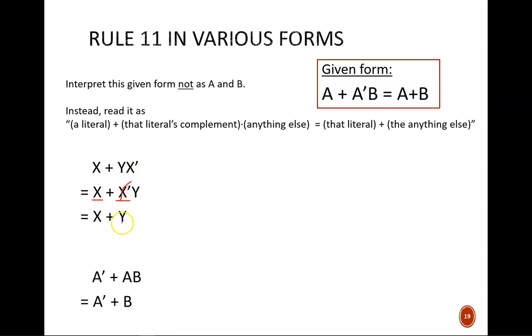In the next example, the shoe is on the other foot. A prime is on its own, and A is ANDed with something else. A prime is the standalone literal, and A is its complement. So, we drop off the A, leaving us with A prime or B.